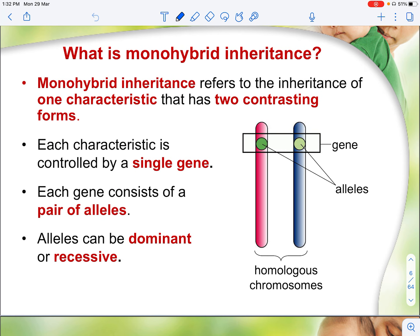Monohybrid inheritance may look like a big word, but if we split it: 'mono' means only one — one characteristic we are interested in. Hybrid inheritance refers to the inheritance of only one characteristic that has two contrasting forms, meaning very different formations. If one is pink, the other must be white — that is what is meant by contrasting. Each of these characteristics is mainly controlled by a single gene.